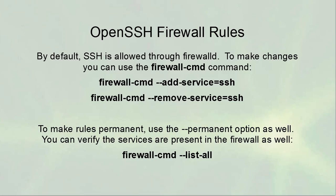By default, SSH is allowed through the firewall. To make changes, use the firewall-cmd command to add or remove the service. You can make rules permanent with the --permanent flag, but note that this only changes the configuration files and will not affect the active firewall settings until it is restarted. You can verify current firewall services using firewall-cmd --list-all.